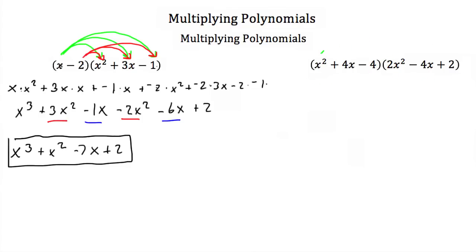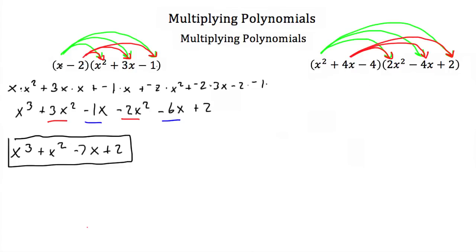So we'll take x squared and multiply it by 2x squared, then x squared times negative 4x, and x squared times 2. Then we'll take 4x times 2x squared, 4x times negative 4x, and 4x times 2. And don't forget the negative 4 — we'll multiply it by 2x squared, by negative 4x, and by 2.